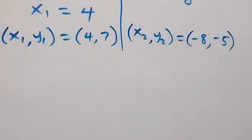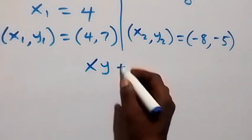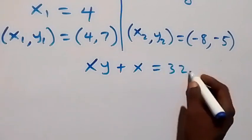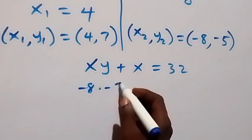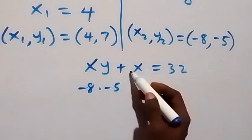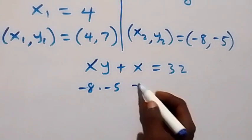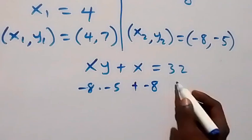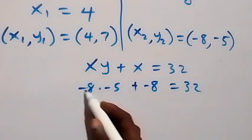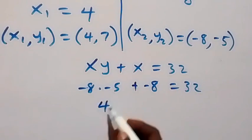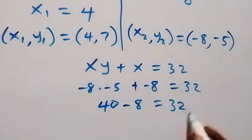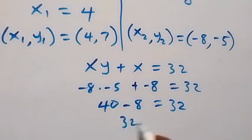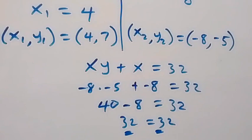Checking the second solution in equation 1: xy plus x equals 32. x is minus 8, y is minus 5: minus 8 times minus 5 plus minus 8 equals 40 minus 8, which equals 32. Left hand side equals the right hand side — it satisfies equation 1.